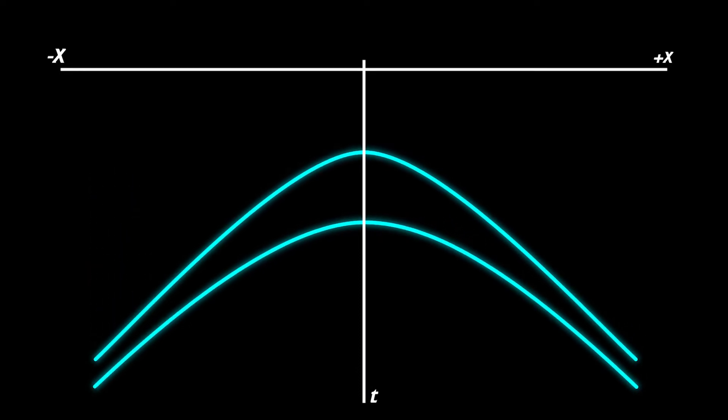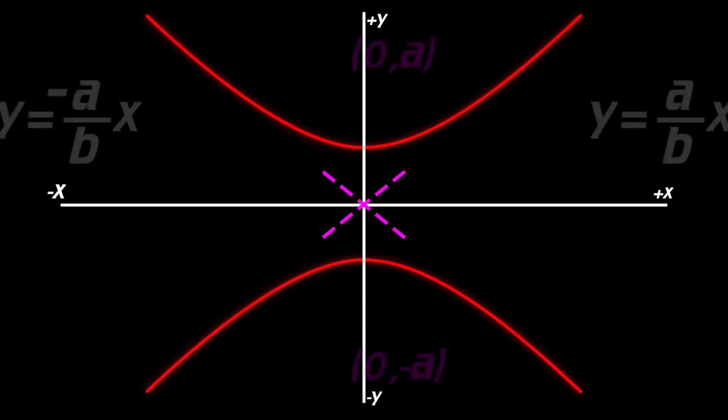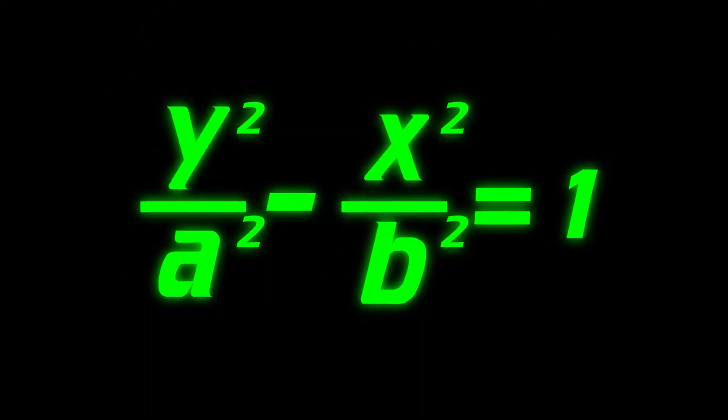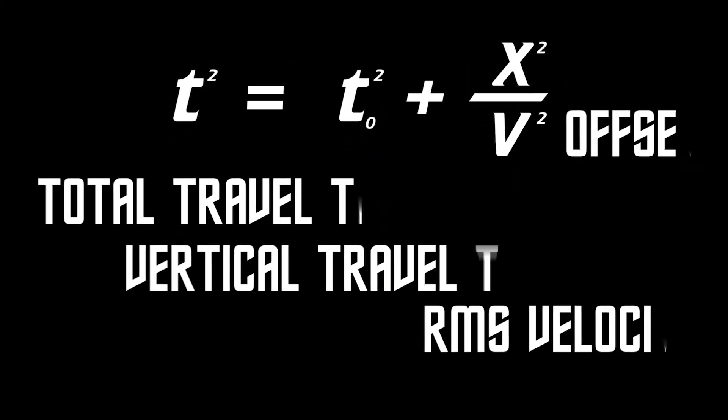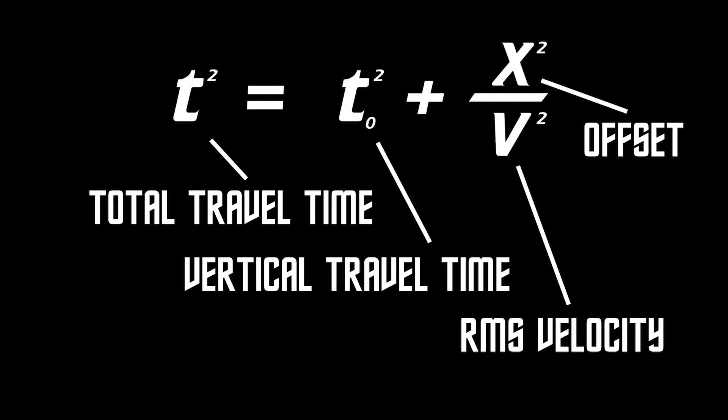Through the magic of arm waving and manipulations of the equation of the hyperbola, we end up with something called the normal move out equation. Where geophone offsets, total travel times and root mean square velocities can be used to flatten out our seismic hyperbolas.